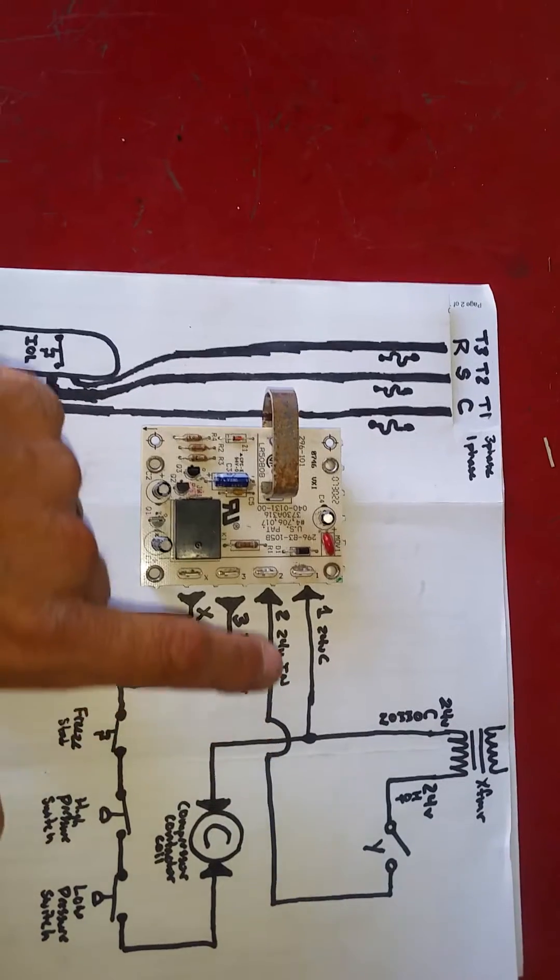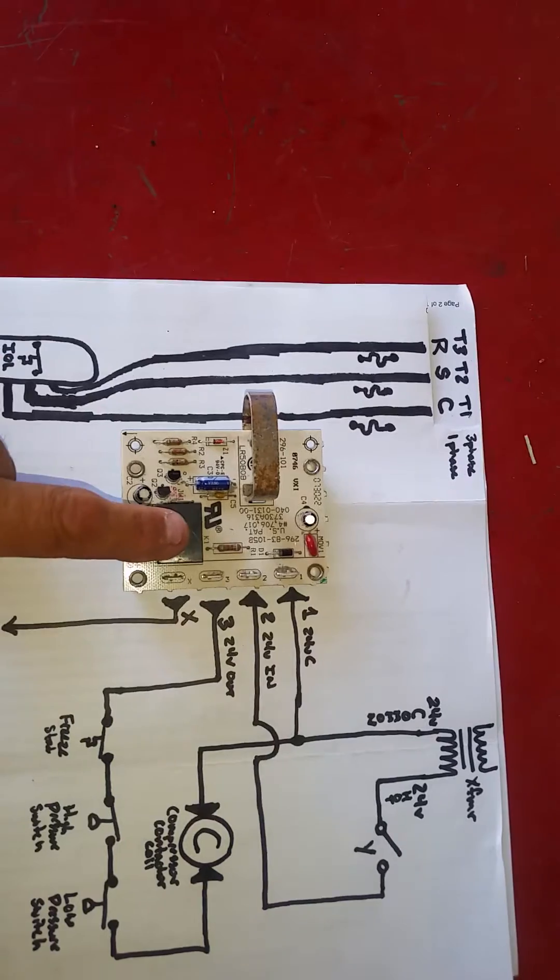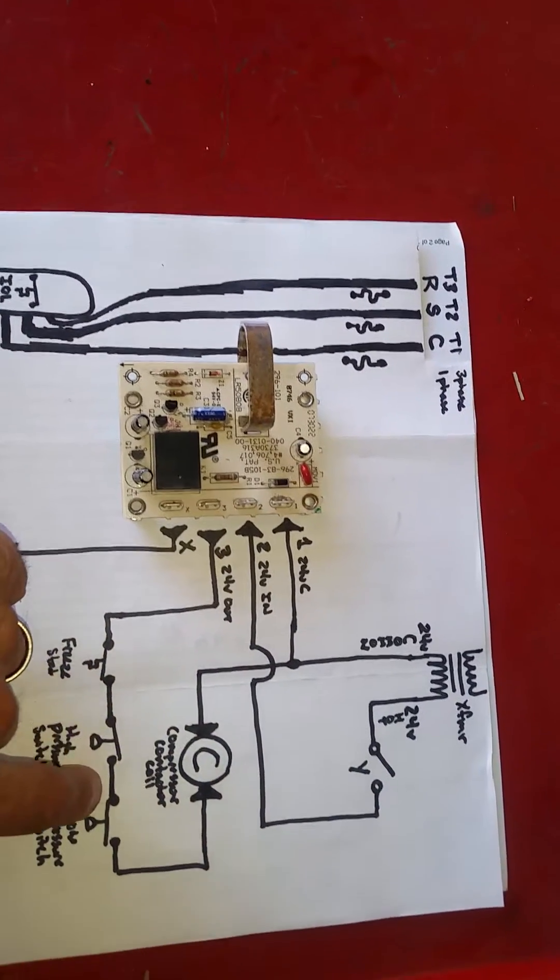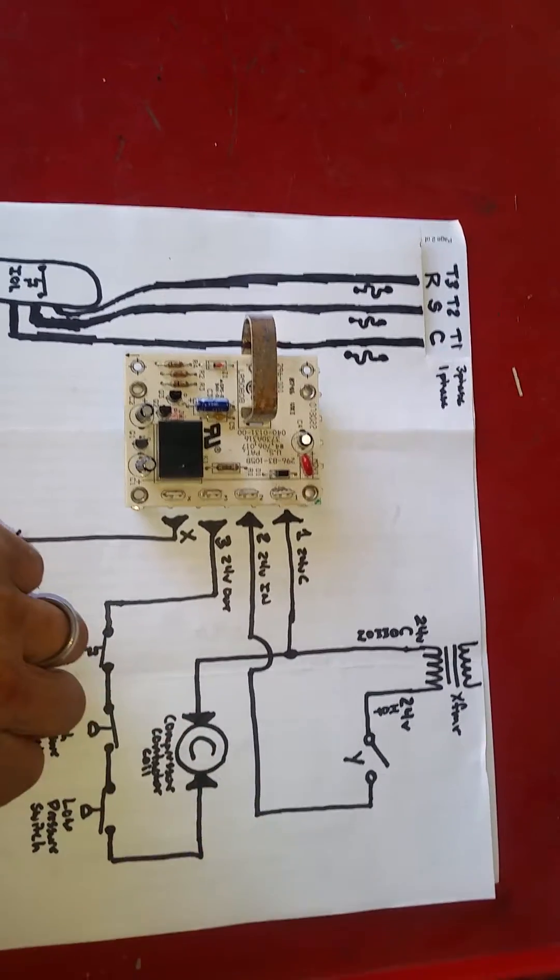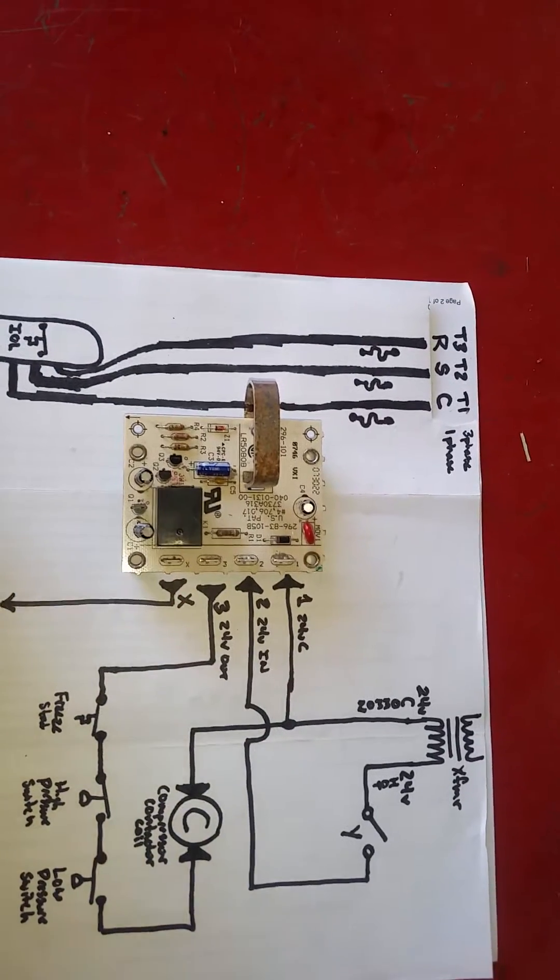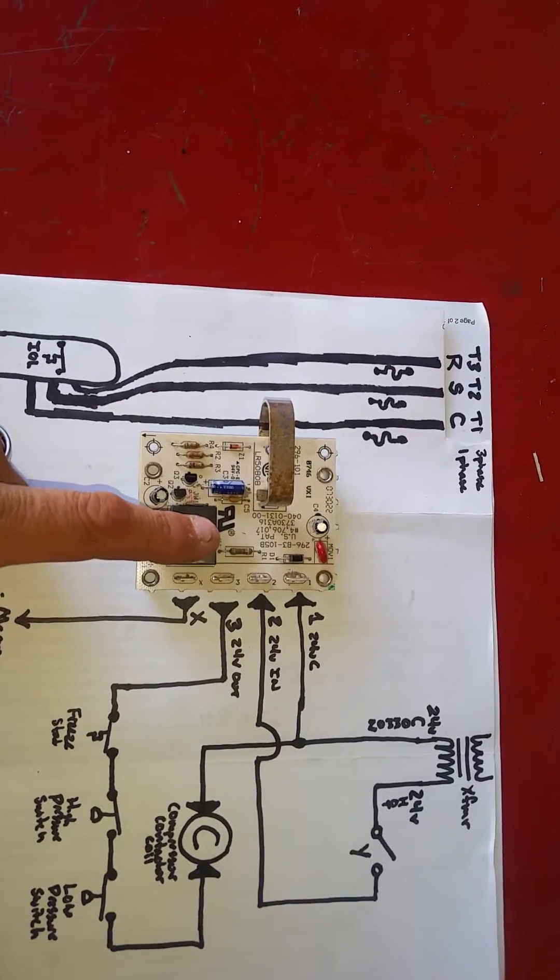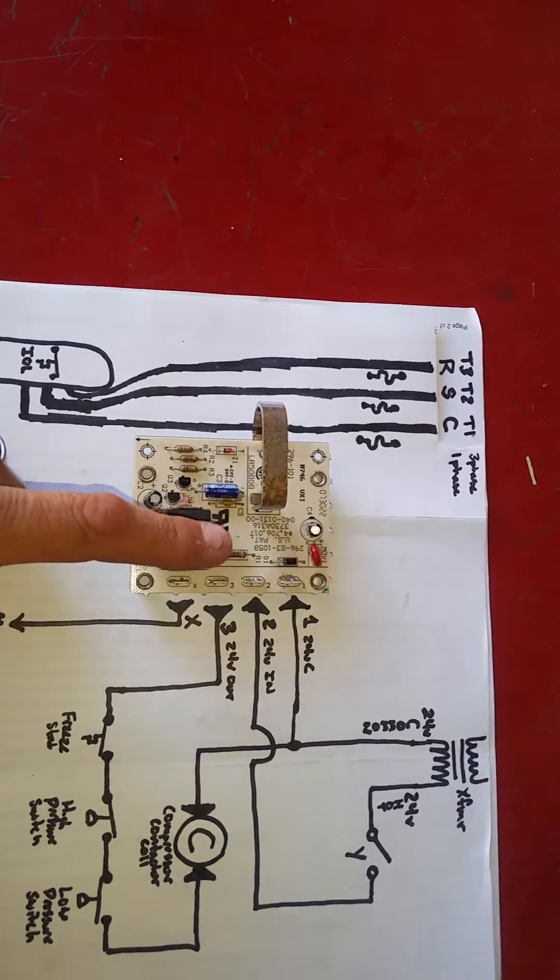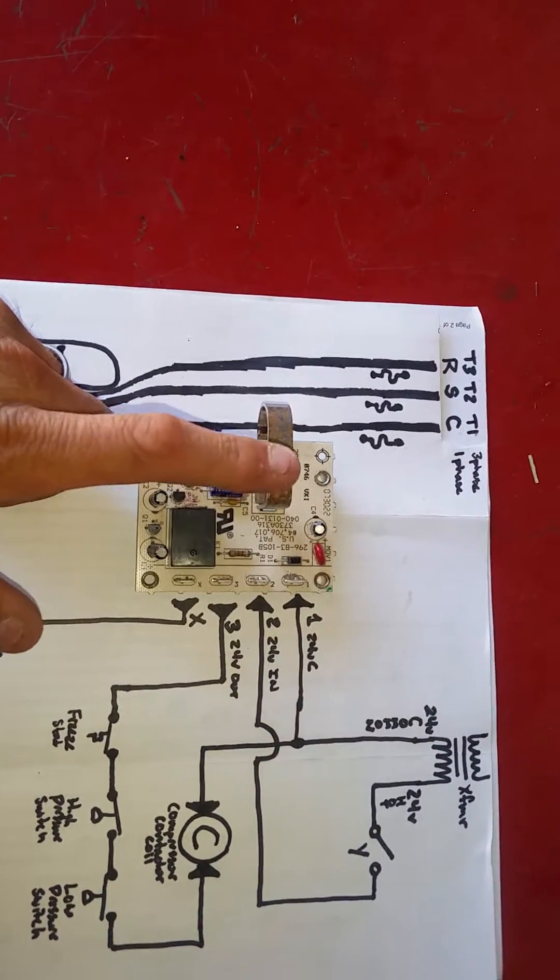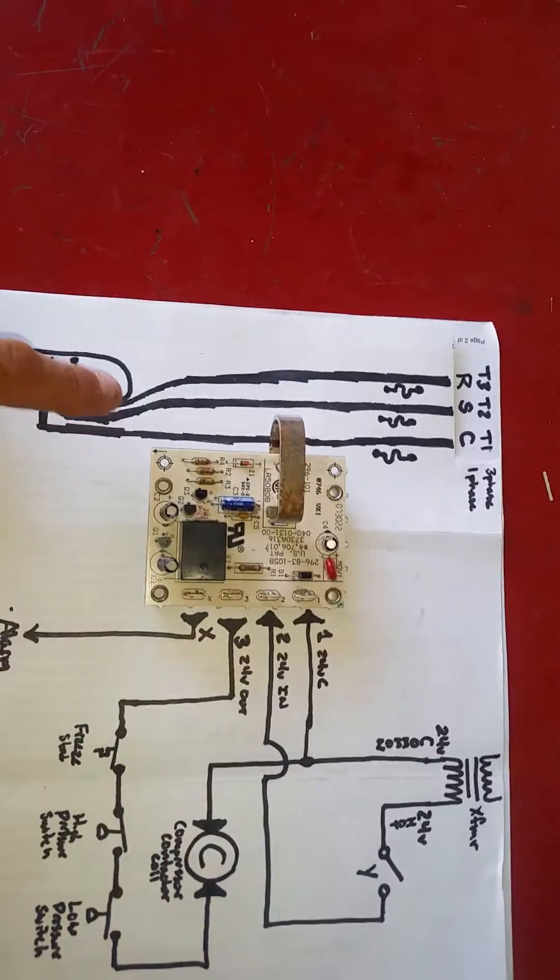So when 24 volts enters pin two, 24 volts is sent directly out to pin three via this normally closed relay, and goes through each of the safety switches in series, and energizes our compressor. This is the key of this board. The reason why I call this a current lockout board is that this board is required to see at least 2.5 amps through this current sensor within three seconds of the compressor contactor closing and the compressor starting.